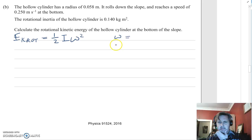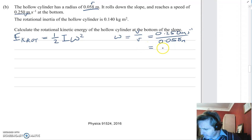So I need to find out what omega is here. That's where we use the radius and this v. We're going to use omega equals v over radius. Pretty straightforward. So I'm going at 0.250 meters per second over 0.058 meters. And that gives me an angular velocity of 4.31 radians per second.